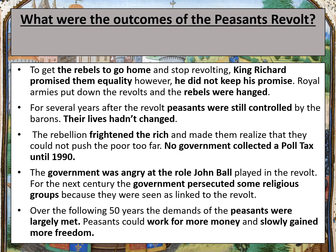On the other hand, a positive outcome of the Peasants' Revolt was that it frightened the rich so much it made them realise they could only push the poor so far. The revolt demonstrated that peasants were willing to come together and rebel against the king and the nobility in order to get what they wanted — this had never happened on this scale before in medieval England. Due to the Peasants' Revolt and the fact that so many peasants rebelled against the king, no government collected a poll tax until 1990, which is over 600 years later.